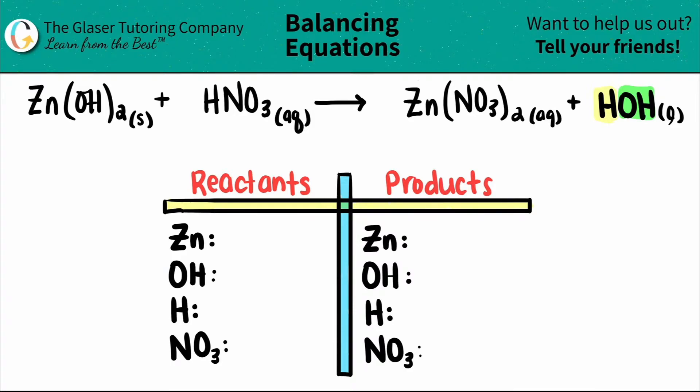Now let's write down how many we have of our polyatomics and our elements. Let's start with the left-hand side. I have zinc, Zn. I don't see any coefficients here, so I have one. And not coefficients, but subscripts. So I have one zinc because there's nothing here. For my hydroxide, my OH, I have two OHs. So I'm going to put a two here.